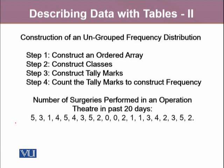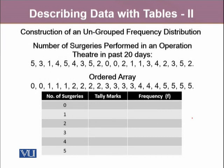Let's take a discrete variable: the number of surgeries performed in an operation theater over the past 20 days. For example, five surgeries were performed on the first day, three on the second day, and two on the 20th day. The very first step is constructing an ordered array, arranging data from the minimum value to the largest. Once done, we start constructing tally marks. We have six classes starting from 0, 1, 2, 3, 4, 5, and you'll notice that between each class the width is one unit.